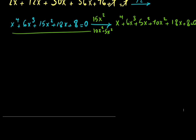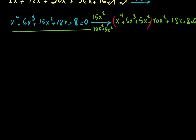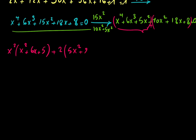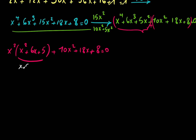If I look at the first group — x⁴ plus 6x³ plus 5x² — I can factor x² and get x²(x² + 6x + 5). Now x² + 6x + 5 factors as (x+5)(x+1). That's really nice.